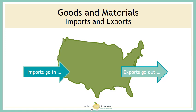Our theme of movement also talks about goods and materials. Goods and materials are the products we use on a daily basis: food, electronics, paper, oil. We look at these as imports and exports. If you live in the United States, imports are things that we bring in from other countries, and exports are materials that we send out to other countries. So we may import goods from China — maybe electronics — that would be an import into our country. And maybe we export food to a different country. Imports and exports are how we move goods and materials from one country to another.